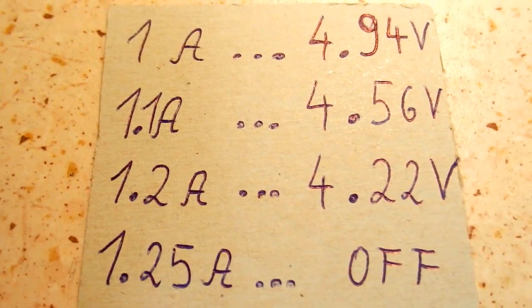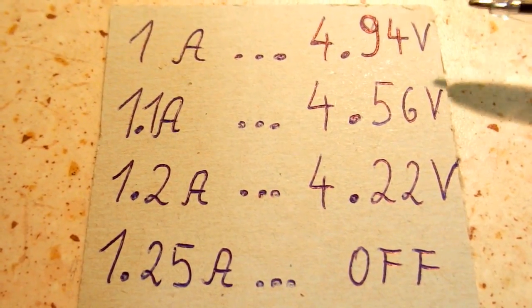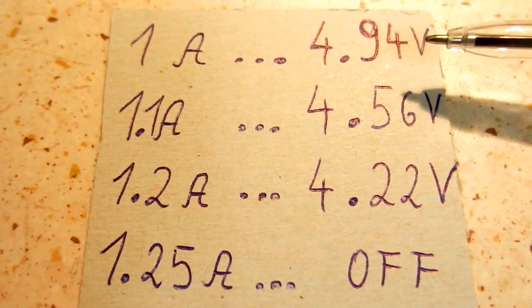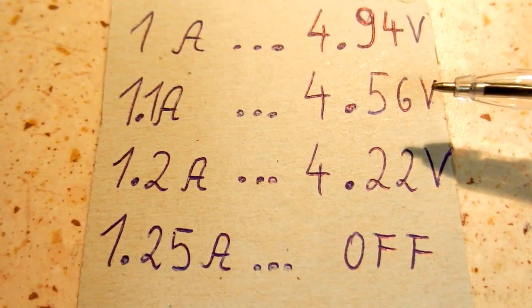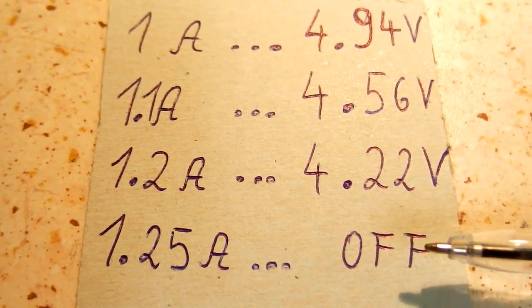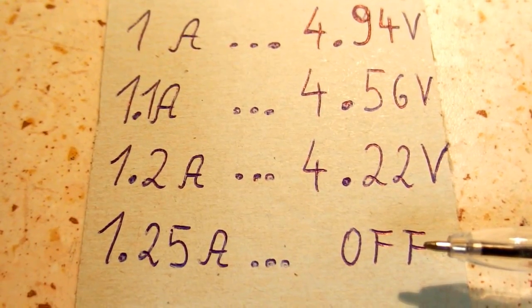So this is the current versus voltage chart. And you can see at 1 amp the voltage is really fine. At 1.1 amps it's getting too low for USB. And at 1.25 amps it's shutting down.